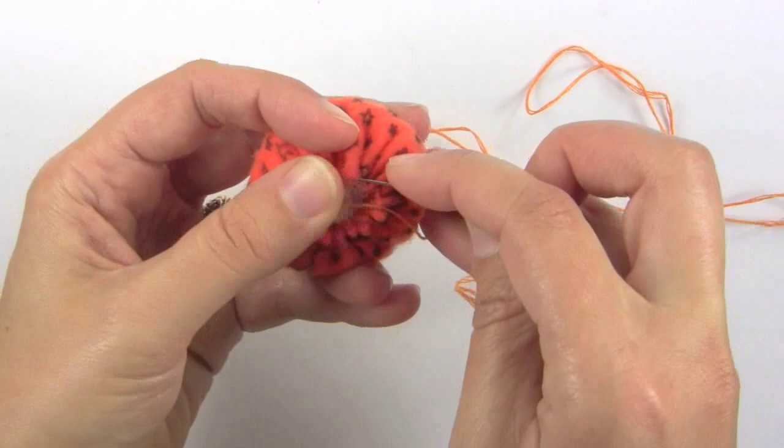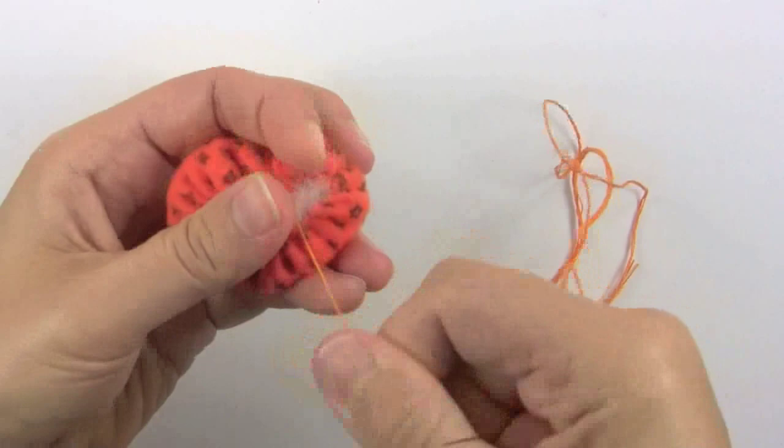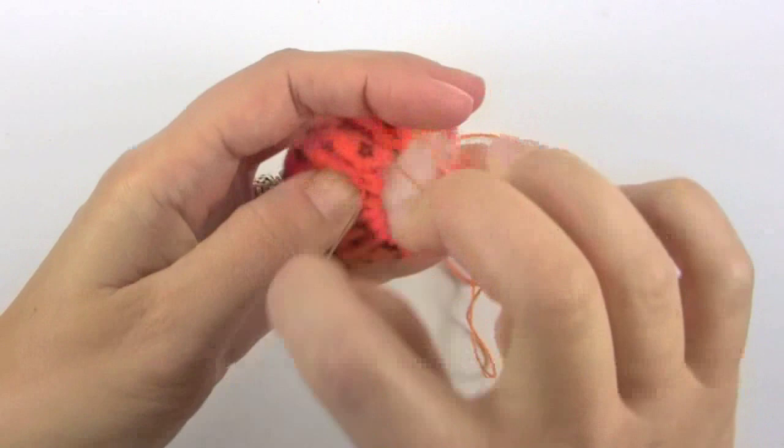Take your needle and you're just going to make little zigzag stitches across the top. I'm going in one side and then pulling it out the other, and then I do kind of the opposite side.